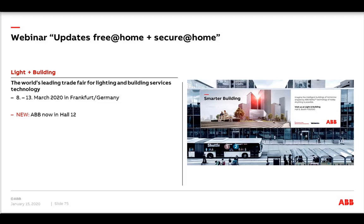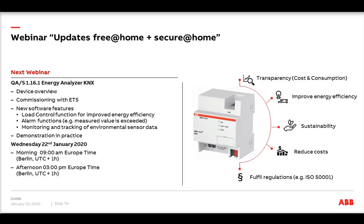The famous Light and Building fair will take place this year in Frankfurt, relatively early from the 8th to the 13th of March. ABB is now in a new hall — Hall 12, not Hall 8 as before. There will be news in Free at Home shown there as well. The next webinar will be in just one week — the new Energy Analyzer KNX — on the 22nd of January. The invitation will be sent out this afternoon.